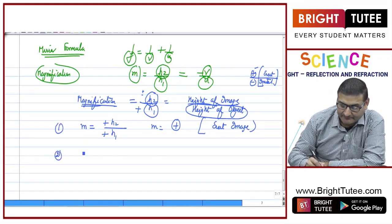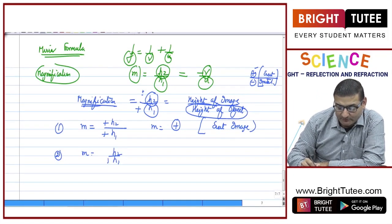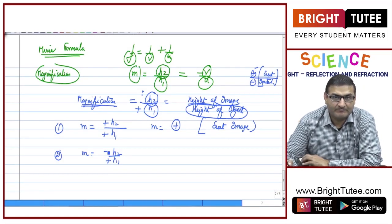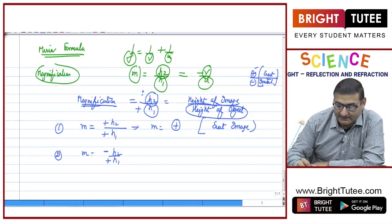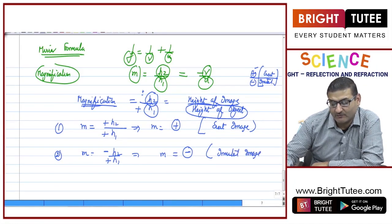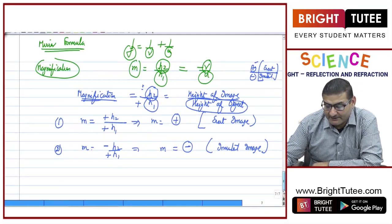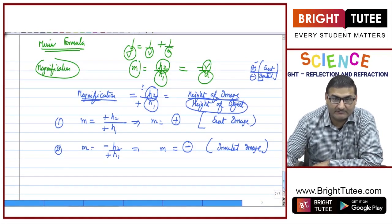If magnification = h2/h1 and the height of object is always positive, then if the image is also positive, we get a positive magnification value — this shows an erect image is formed. We just need to see whether the image formed is erect or not. If the image is inverted, h2 is negative, so magnification comes out to be negative — meaning an inverted image is formed.